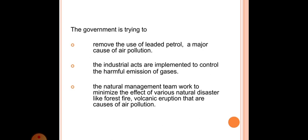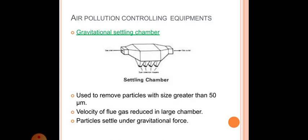Air pollution controlling equipment: gravitational settling chamber used to remove particles with size greater than 50. Velocity of flue gas reduced in large chamber. Particles settle under gravitational force as shown in the figure.